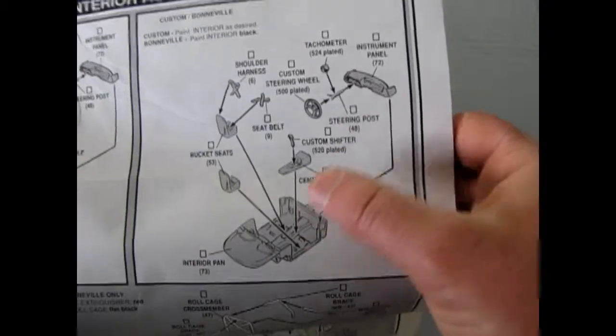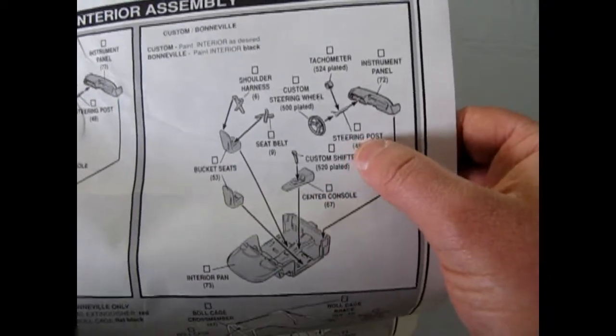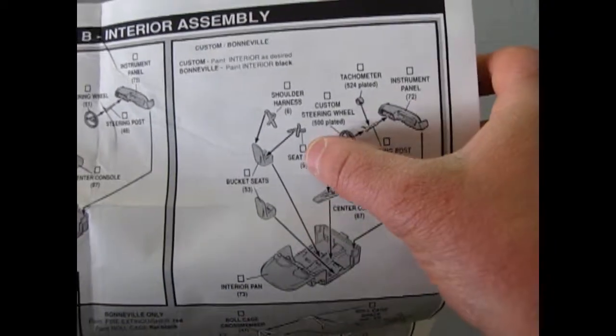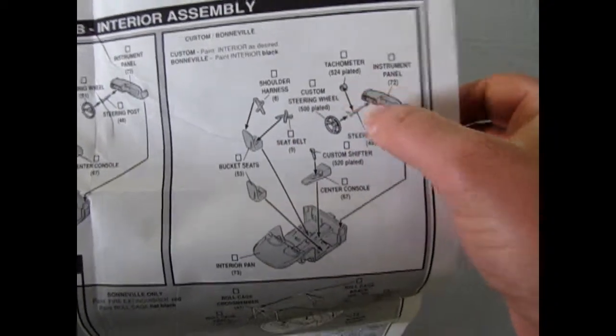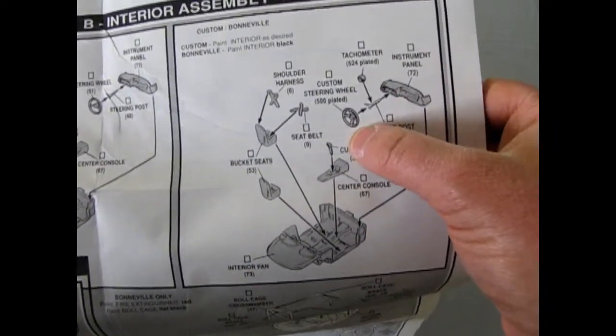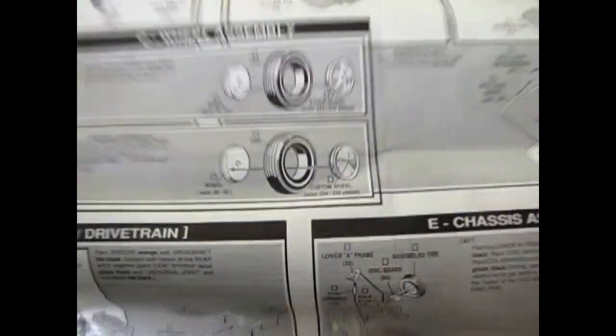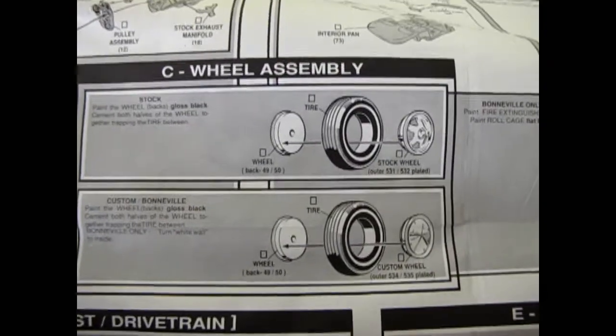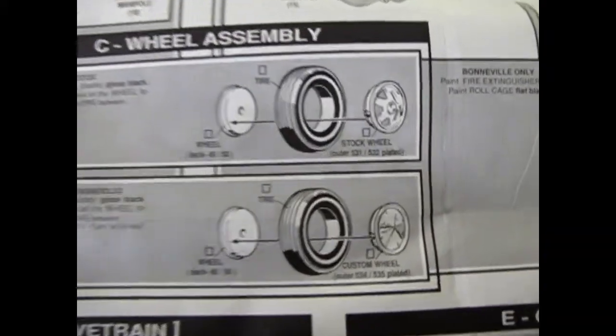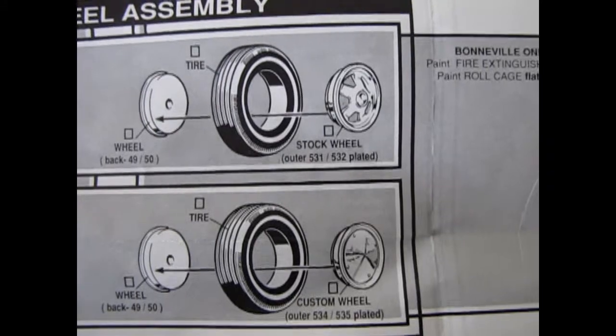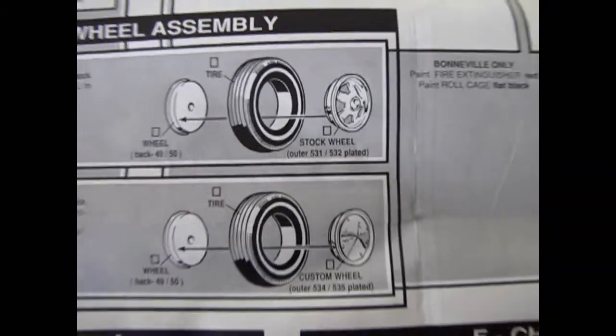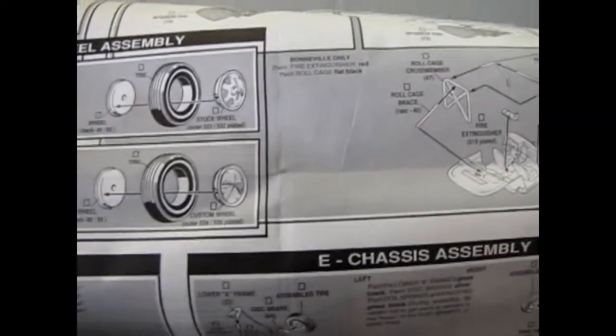Okay, so then you get some custom pieces for the Bonneville edition, which include seat belts and a tachometer, and a different type of steering wheel, a four-spoke instead of the factory two-spoke. Okay, so then we get into the wheel assembly. So there's your stock aluminum wheels right there and the moon hubcaps. So pretty cool. Moon for the Bonneville.